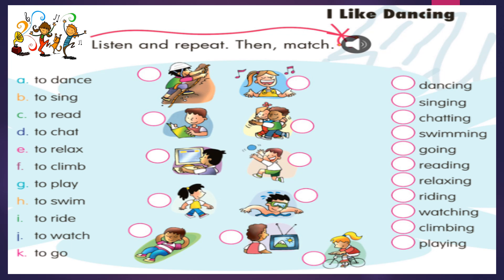My kids, we are going to start. To dance — letter A, very good — dancing. Y observamos la imagen donde están bailando. To dance, dancing. We continue. To sing — letter B — singing. Very good. Cantando. To sing, cantar. Singing, cantando. Y hemos unido con la imagen, con la niña que está cantando.